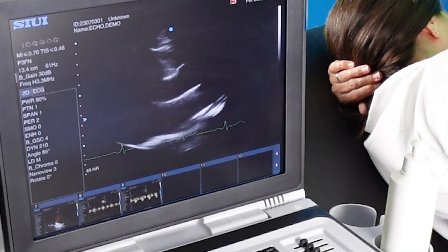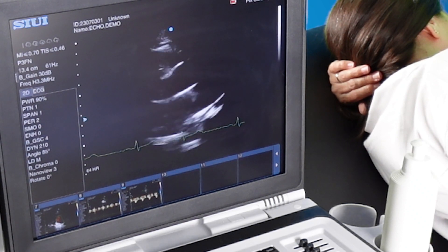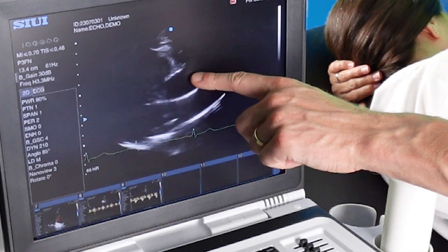We're now moving up one rib space to focus on the aortic root and check for any signs of dilatation.